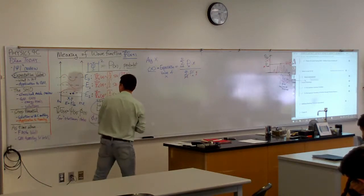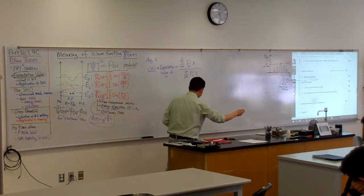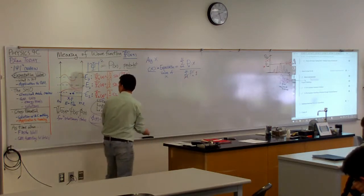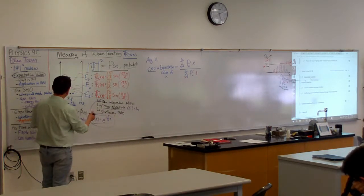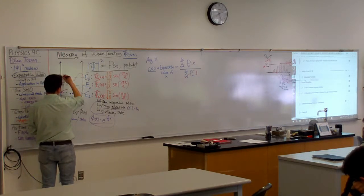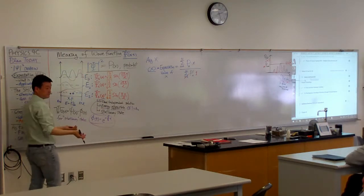Really, conceptually, the way it works is this. The probability density for this ends up being something like this, right? Psi absolute value squared.